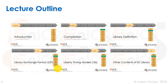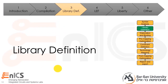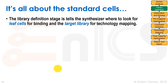That was just a short part on syntax analysis because that's not the main focus of this lecture or course. We're going to start from the second stage, which is library definition. Library definition will take us from now until the end of this first part of the synthesis lecture, because it's something we have to elaborate on very deeply before we go on. It's all about the standard cells. The library definition stage tells the synthesizer where to look for leaf cells for binding, and the target library for technology mapping.